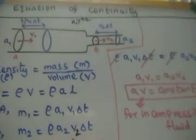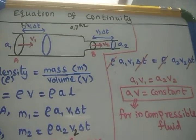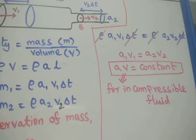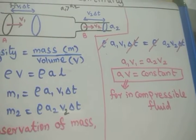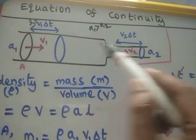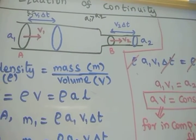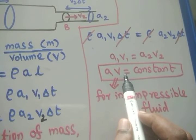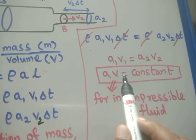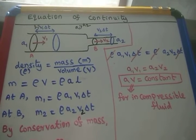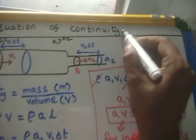This is the equation of continuity of an incompressible non-viscous fluid having a steady flow through the pipe. It states that during the streamlined flow of a non-viscous and incompressible fluid through a pipe of varying cross section, the product of area of cross section and the normal fluid velocity remains constant throughout the flow. This is important for Bernoulli's theorem.